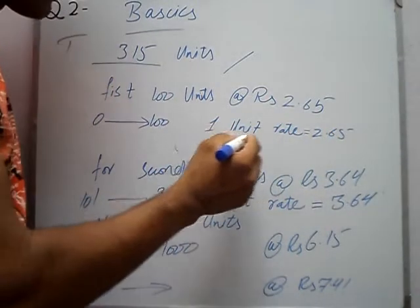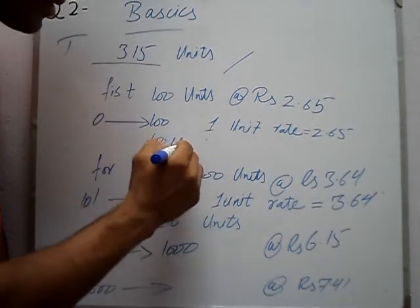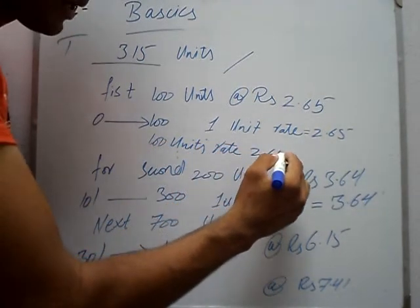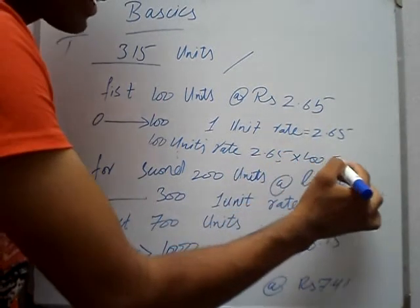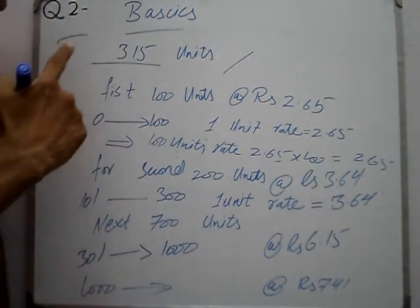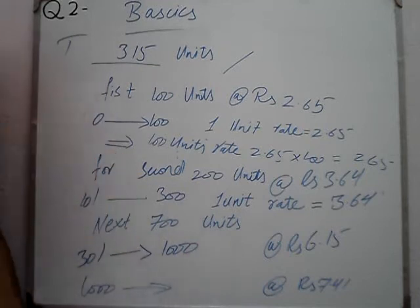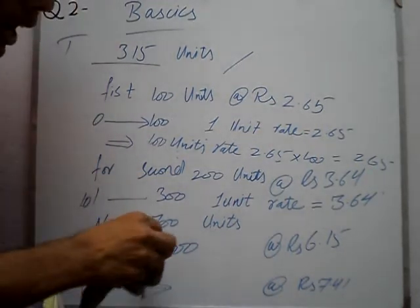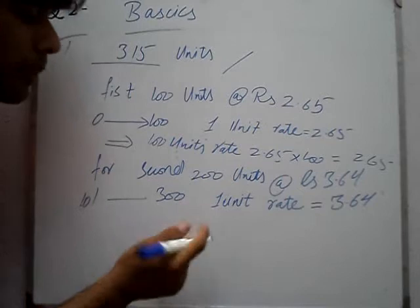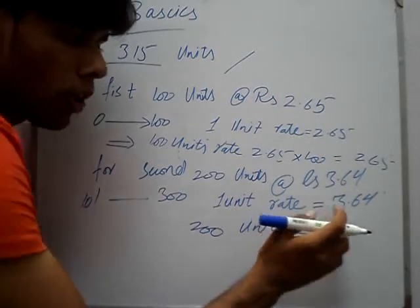315 units are given. For the first 100 units, the rate is Rs 2.65 — so 100 units multiplied by 2.65. Then the remaining units: 200 and 15. For the next 200 units, from 101 to 300, how many units? 200 units. So what do we do? For next 200, multiply.